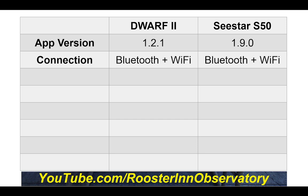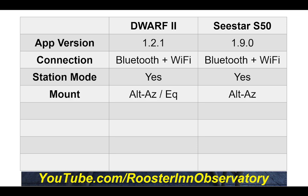Both initiate the connection in Bluetooth mode and then switch to 5G Wi-Fi. Both also permit station mode so the telescope can join your home network and be accessed from pretty much any computer in the house. Both have an Alt-Az mount; however, the Dwarf 2 lends itself readily to equatorial mounting. You can mount the Sea Star equatorially, but it will complain that it is not level and it's up to you to ignore that.